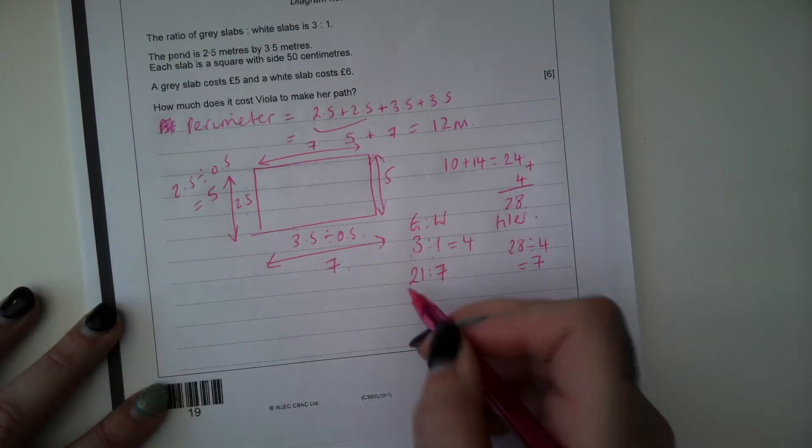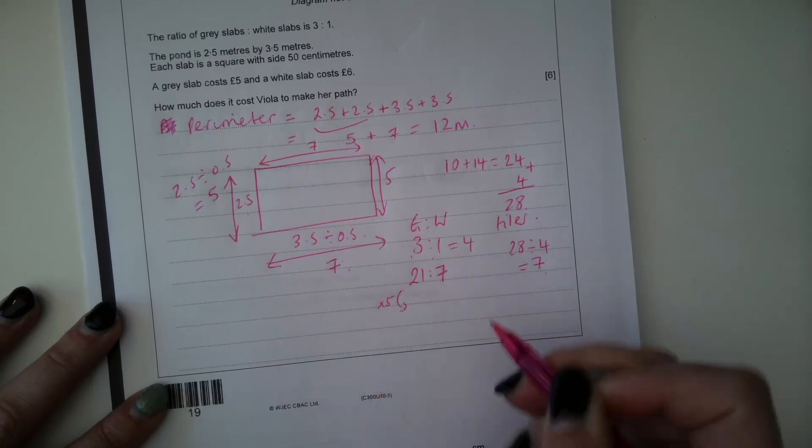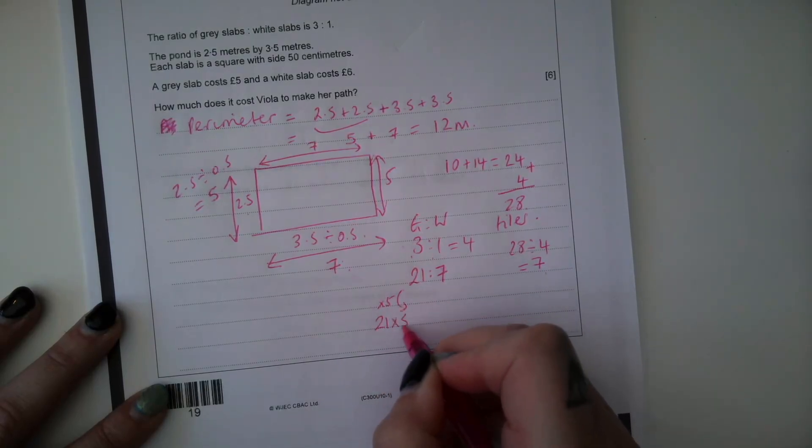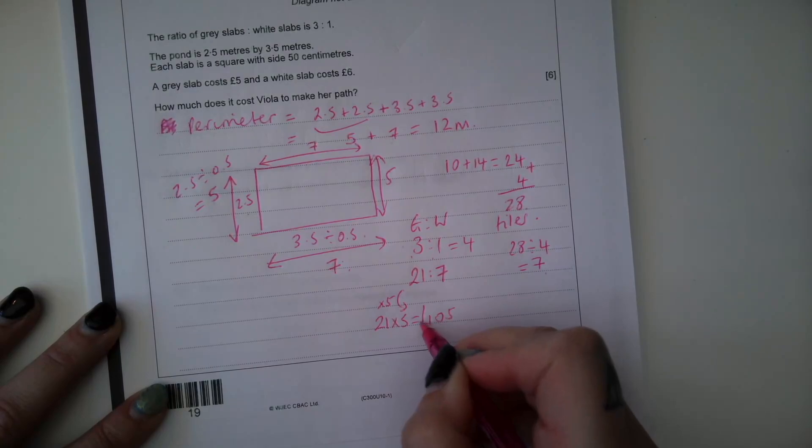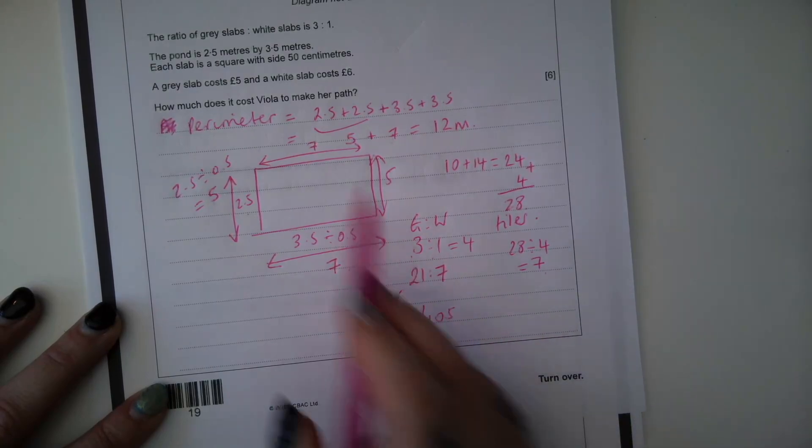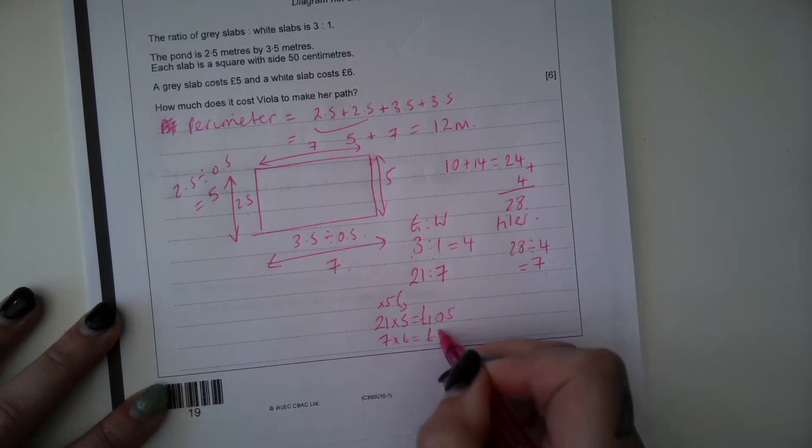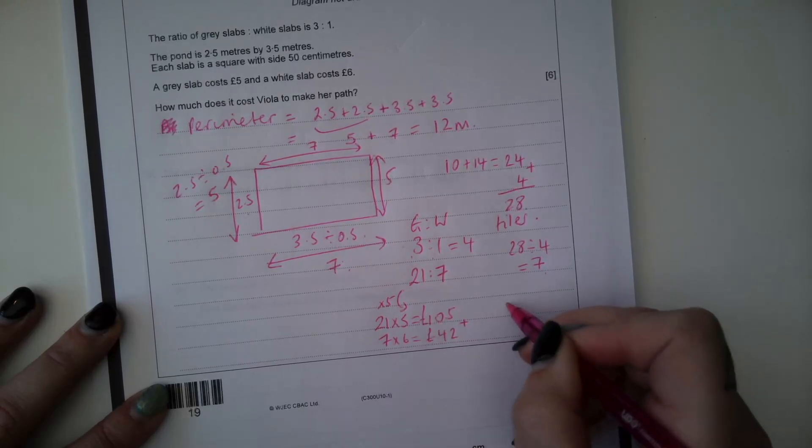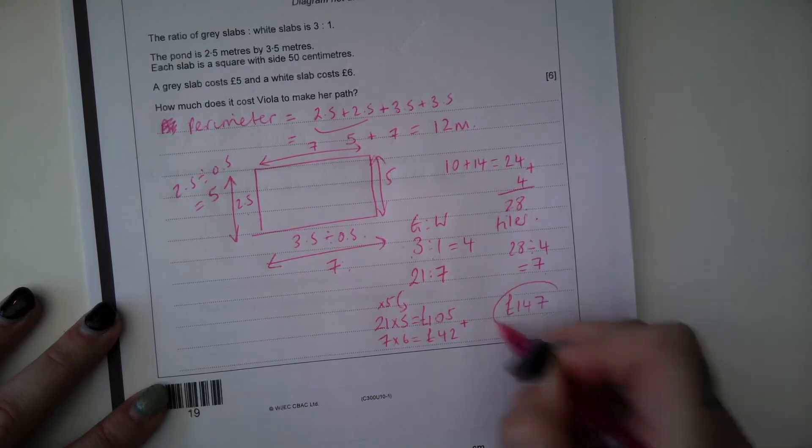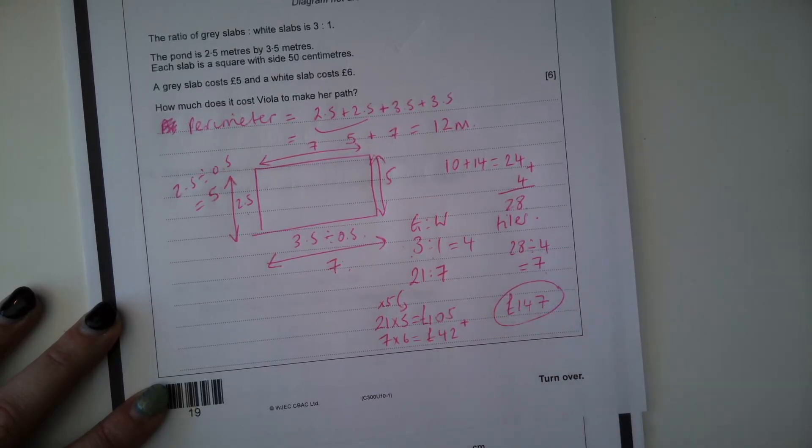Grey slabs cost £5, so if we times that by 5, 21 times 5 is £105. White slabs are £6, so 7 times 6 is £42, and then if we add those together it's £147 in total.